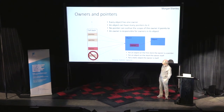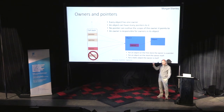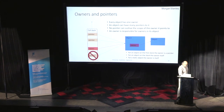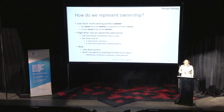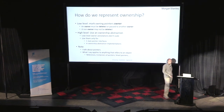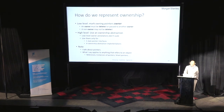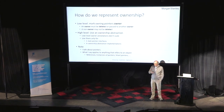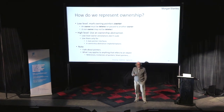We have to distinguish between pointers that just point and pointers that are owners. We have a low-level owner abstraction: an owner is a pointer that must be deleted or transferred to somebody else, which means all other pointers mustn't be deleted because they don't own anything. And this is not just pointers — we have to deal with anything that can point to things: references, smart pointers, containers, and such.